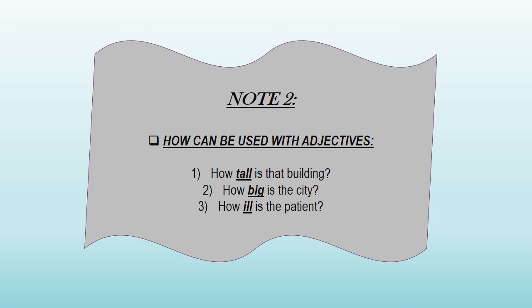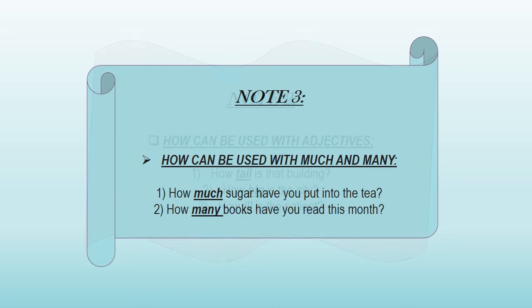Note number two states that interrogative adverbs can be used with adjectives. For example: 1) 'How tall is that building?' 2) 'How big is the city?' and 3) 'How ill is the patient?' In these sentences, the word 'how' is the interrogative adverb and the words in bold — 'tall', 'big', and 'ill' — are adjectives. Note number three shows that interrogative adverbs can be used with 'much' and 'many'. Examples: 1) 'How much sugar have you put into the tea?' and 2) 'How many books have you read this month?'